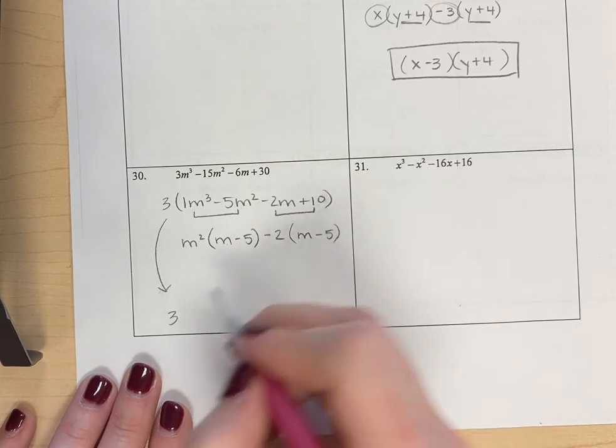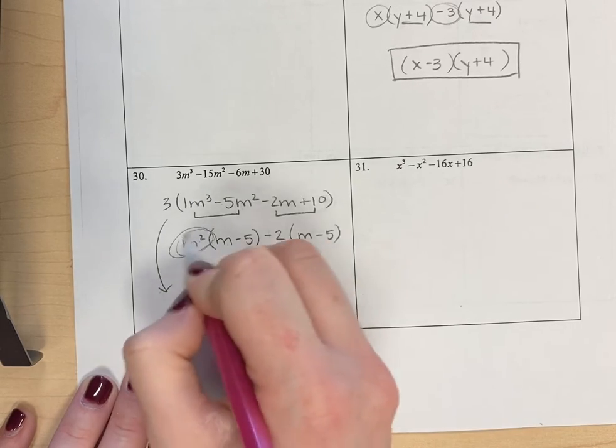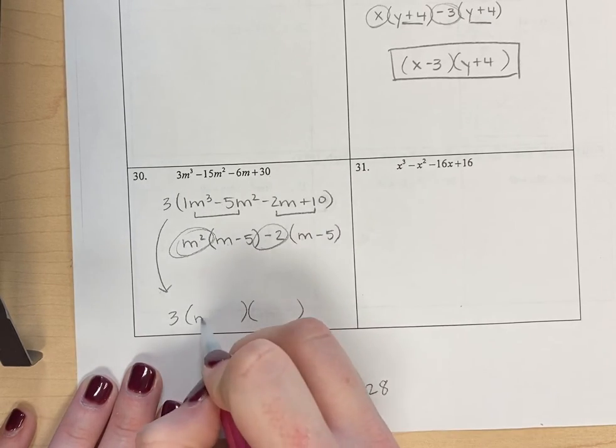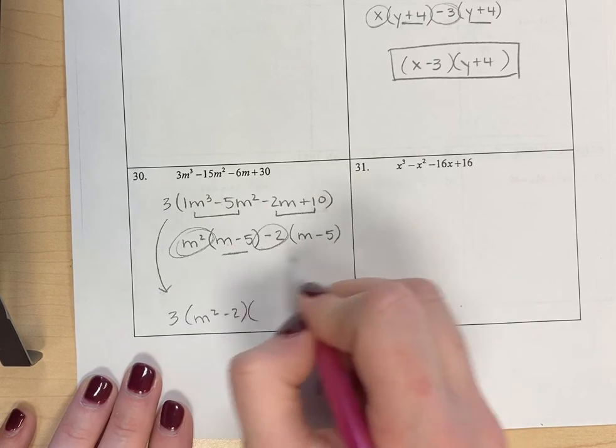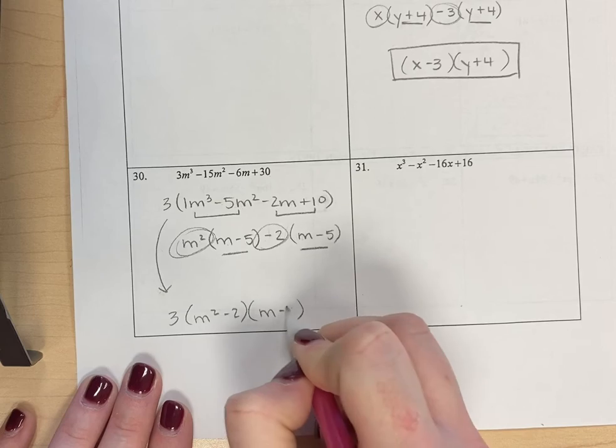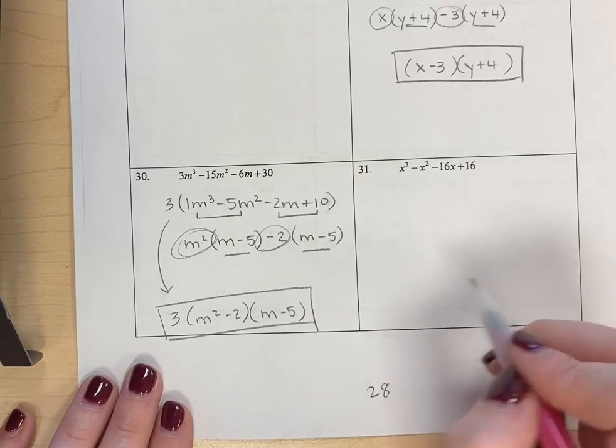These two terms are identical, so that means I did my factoring correctly. So I'll have my two factors. The first one will be the GCFs, so m squared minus 2. The last one will be the factor that they have in common, which is m minus 5. So there's one example with a GCF.